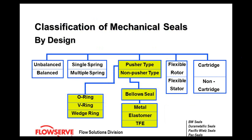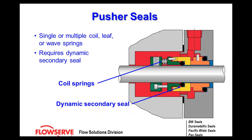Now, the differences between a pusher and a non-pusher seal. Going back to the dynamic secondary sealing area — any time you have a mechanical seal with a spring of any sort (multiple springs, single springs, leaf springs, wave springs) combined with a dynamic secondary seal and dynamic o-ring, that is a pusher seal. Pusher seals are one of the most common types.